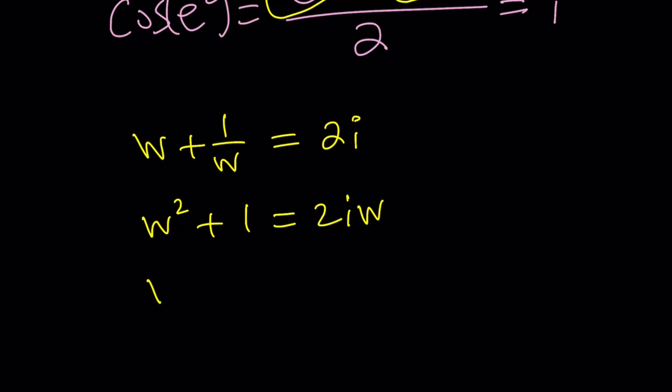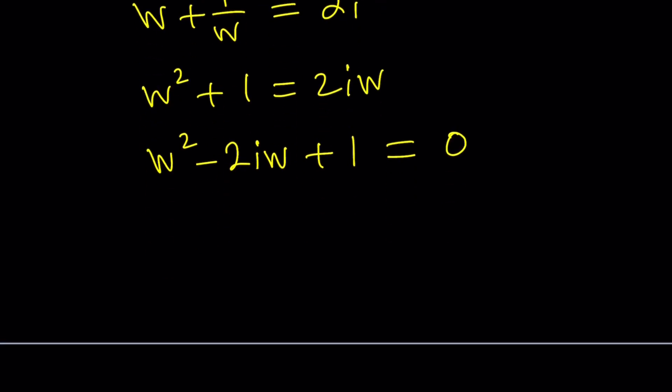and write this as w squared minus 2iw plus 1 equals 0. Now, one of the really cool things you can do is use the quadratic formula, but that's not interesting enough. Let's go ahead and use something else, subtract 1 from both sides. You're going to get this. And then add i squared to both sides.